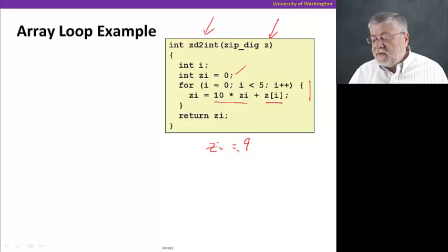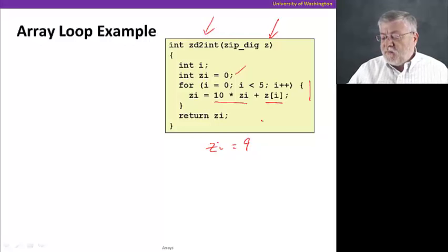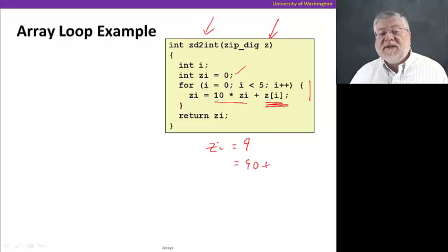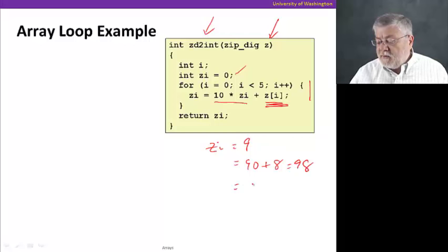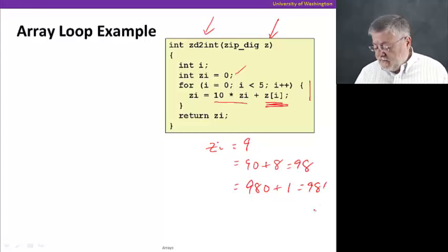We'll see an eight here. We'll get 98. Then the next time around, it'll be 98 times ten plus the next digit, which is a one to yield 981, and so on. You get the idea.